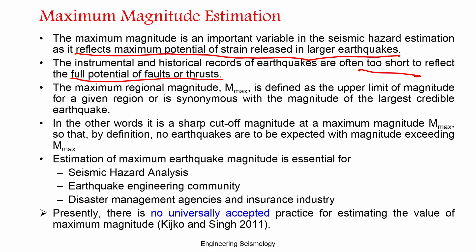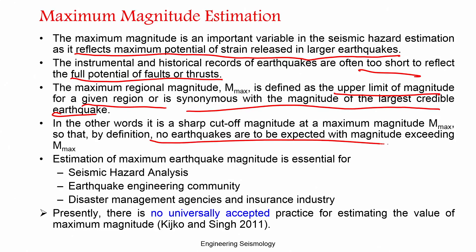The maximum regional magnitude Mmax is defined as the upper limit of the magnitude given for a region — synonymous with the magnitude of the largest credible earthquake. Beyond that, you cannot expect any earthquake. In other words, it is a sharp cutoff magnitude at Mmax, and by definition no earthquakes are expected with magnitude exceeding Mmax.